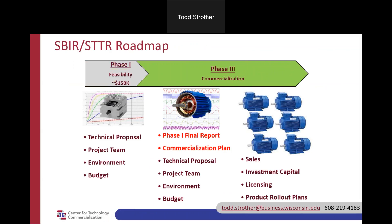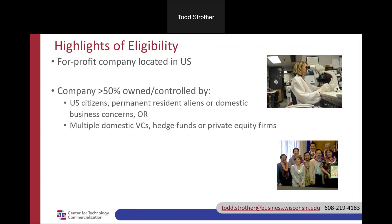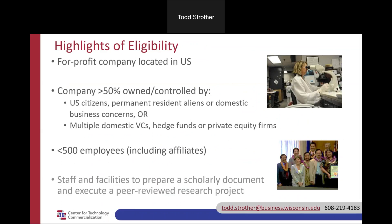It's also not required that you do a Phase 2 — if you can go straight to commercialization with just Phase 1 funds, you're encouraged to do so. There are eligibility requirements: you must be a for-profit company located in the United States, primarily owned by U.S. citizens or permanent resident aliens, and in some cases venture-backed firms may also be eligible. The company must be considered small by federal definitions — fewer than 500 people including subsidiaries — and you should have the staff and facilities to perform solid scholarly research.